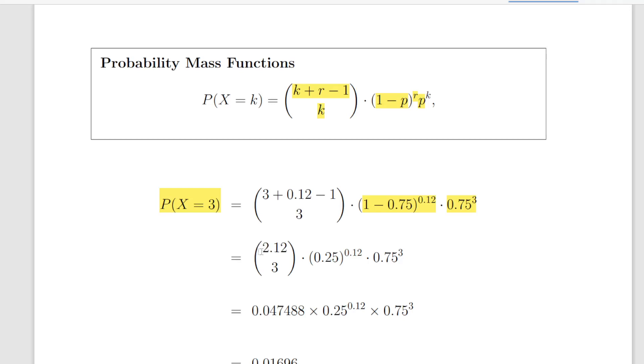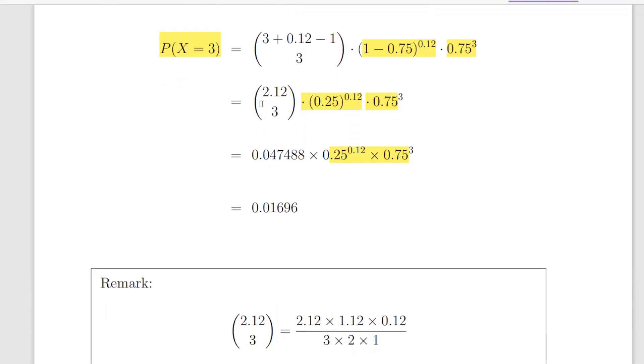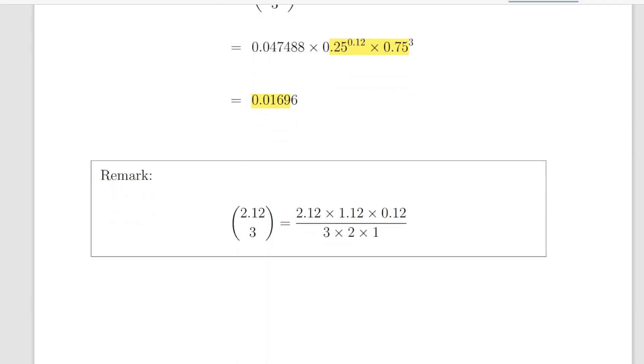So this is what we have here, a binomial coefficient of 2.12 and 3. That's a bit of calculator work. The binomial coefficient should evaluate as 0.047488, and the rest is a little bit of calculator work. Overall, the answer should work out to be 0.01696. That's the answer we're looking for.